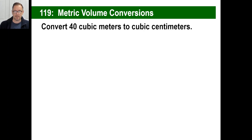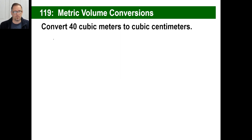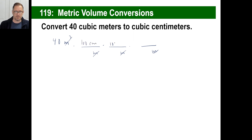Let's try another one: 40 cubic meters to cubic centimeters. Can you visualize a cubic meter? 40 of those — how many cubic centimeters fit in 40 of them? Write what you're given: 40 cubic meters. You know you need three conversion fractions, one for each meter dimension. A meter is the same thing as 100 centimeters, 100 centimeters, 100 centimeters. So you get centimeters to the first, second, third power — cubic centimeters. 40 times 100 to the third power gives you 40 million cubic centimeters.